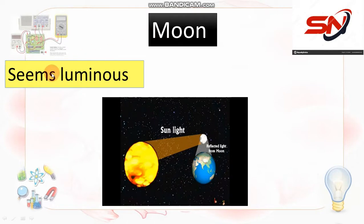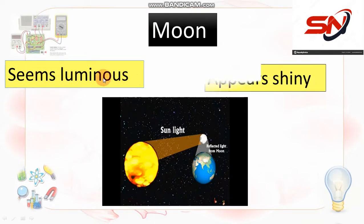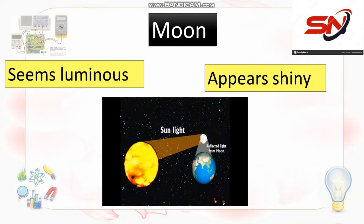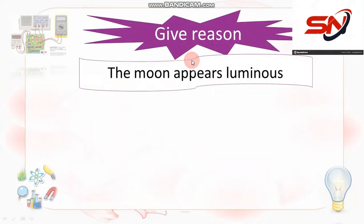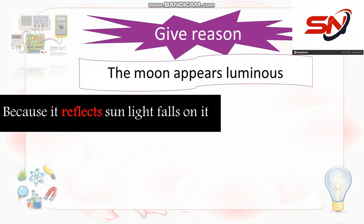The moon seems luminous — luminous equals shiny. يعني بيبان منور. بس استحالة نقول عليه source of light. Give reason: the moon appears luminous — ليه المون بيبان منور مع إنه أصلاً dark body؟ Because it reflects the sunlight. يبقى the moon appears luminous because it reflects the sunlight — لأنه بيعكس أشعاع الشمس.